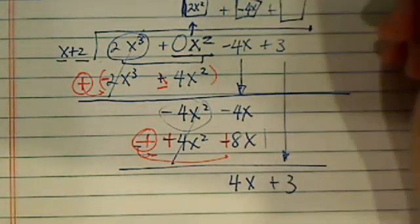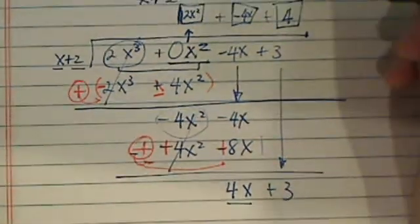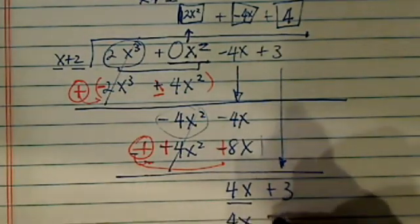Let me add last term over here. All I have to do is match the 4x and then 4 goes in there. 4 times x plus 2. I have a 4x plus 8.